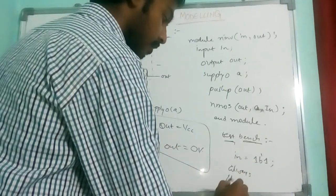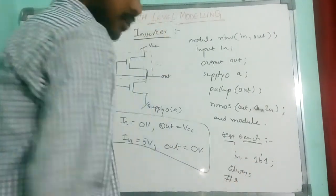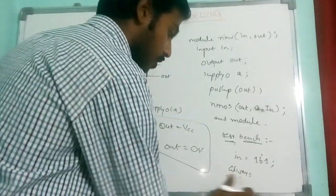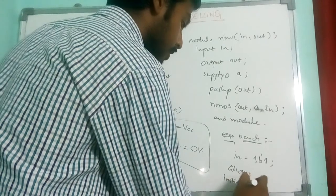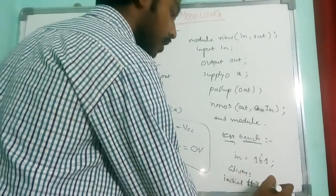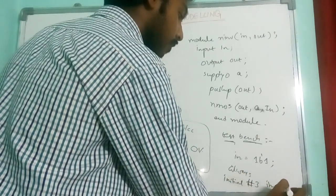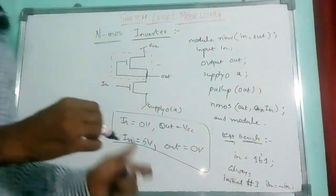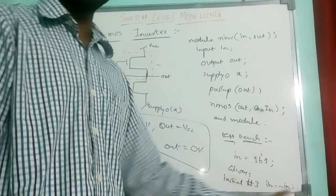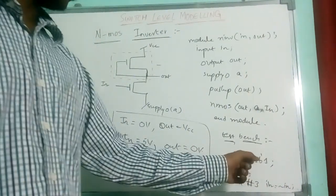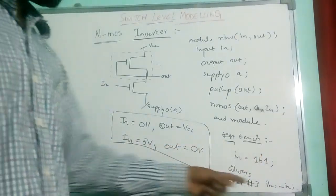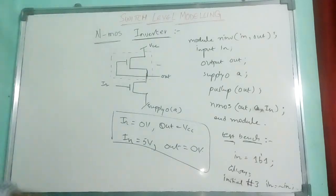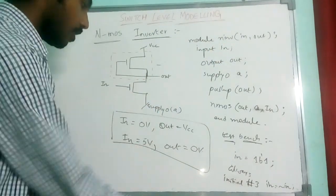For every 3 nanosecond, for every 3 nanoseconds, my input will be changing here. Suppose you consider first the input is high, so my output will be low.